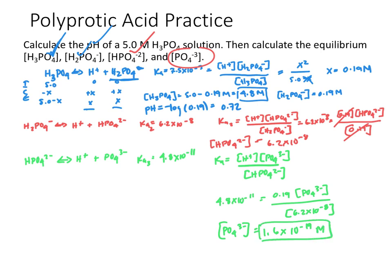We've now calculated all concentrations as well as the pH. The reason we can handle these problems this way is that each successive ionization occurs to a smaller and smaller extent — Ka values go from 10⁻³ to 10⁻⁸ to 10⁻¹¹, so the production of H⁺ in each successive step is significantly smaller, and the ion concentrations become negligible. This is why we can make the assumptions we do. Always check the 5% rule before proceeding, and you should be fine with polyprotic acid calculations.